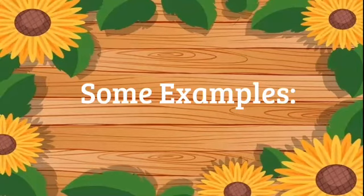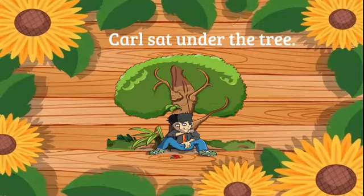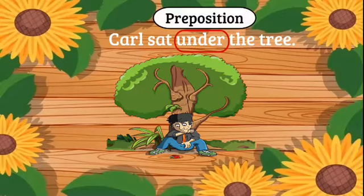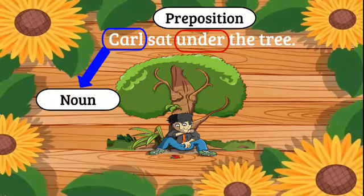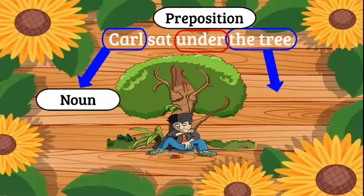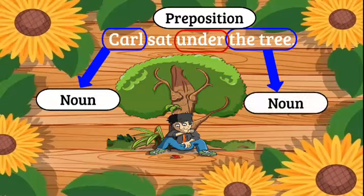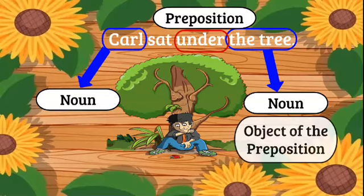Now here are some examples. Here we have our sentence: Carl sat under the tree. Under is our preposition, connecting our first noun, Carl, to the object of the preposition — another noun, which is tree. So Carl sat under the tree, and under, that preposition, is telling us where Carl is in relation to the tree. Tree being the object of the preposition.